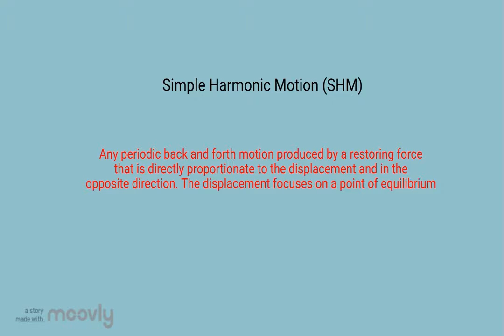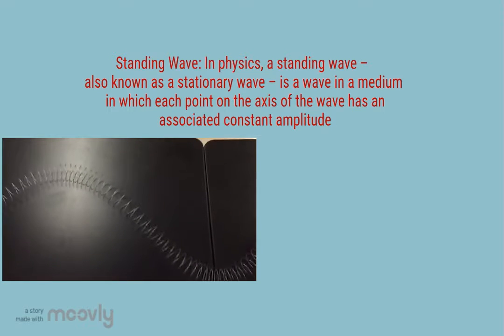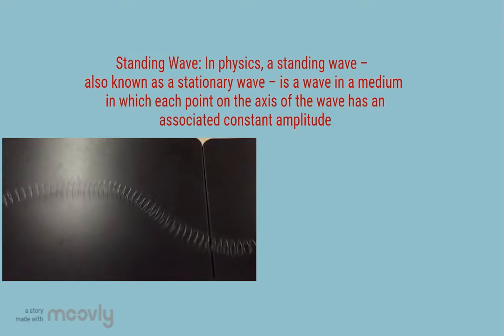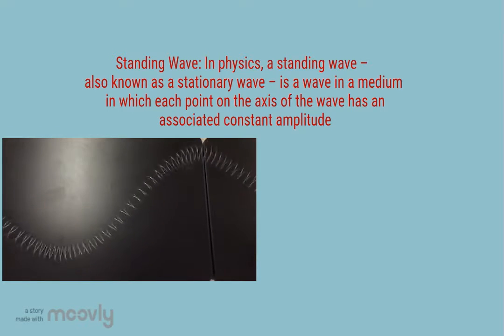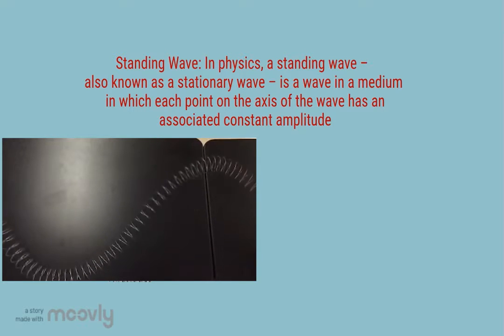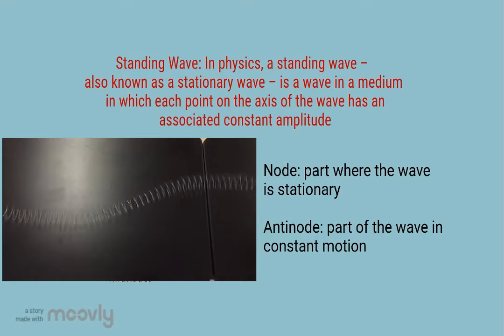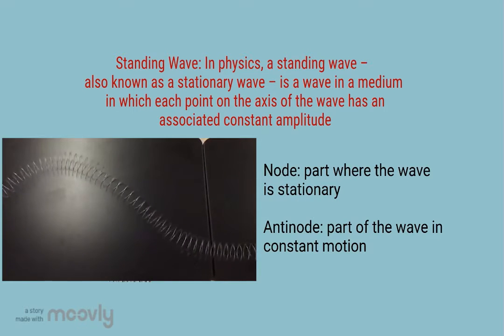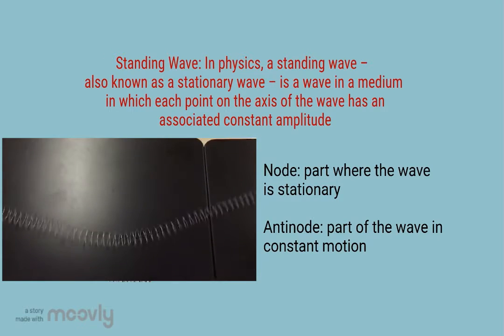Simple harmonic motion is an oscillating wave. When it occurs in an open or closed pipe, it creates a resonance. At a constant oscillation, a standing wave is formed. The areas where the wave is stationary are called nodes, and the spaces with constant movement are called antinodes.